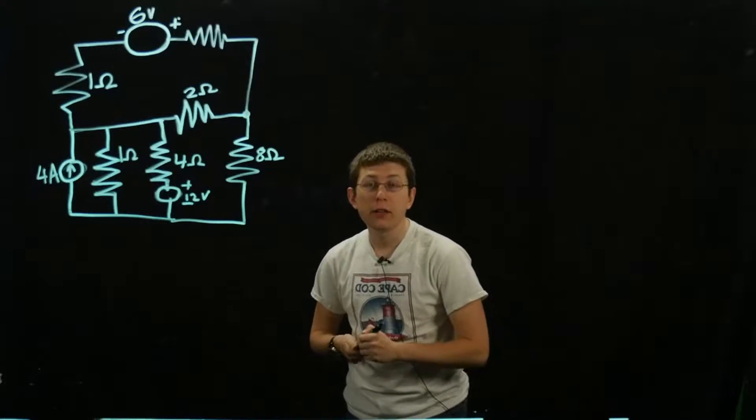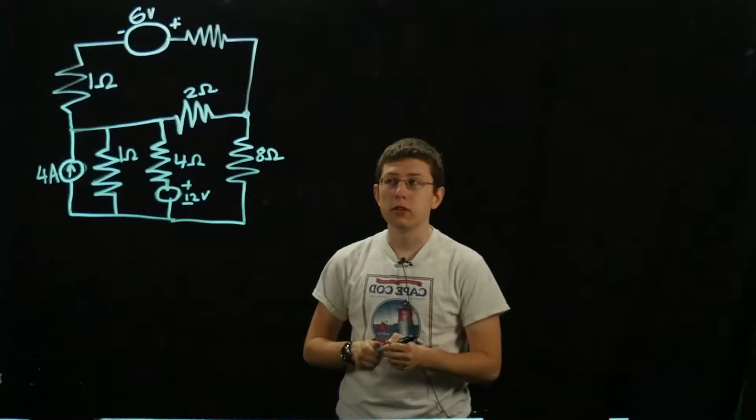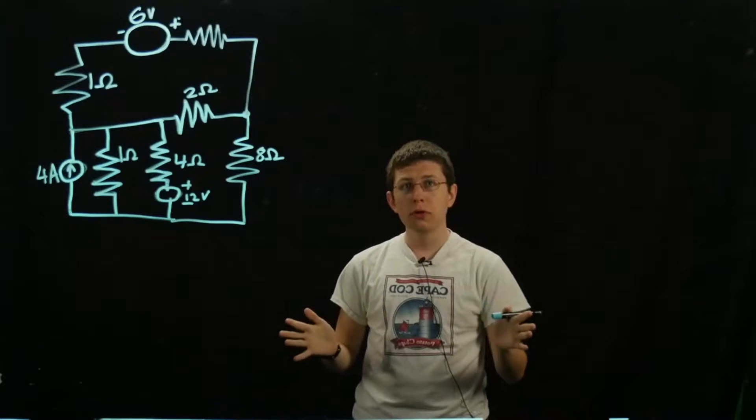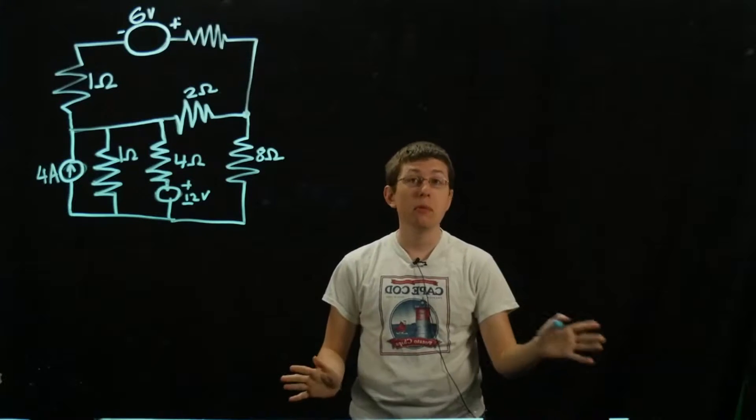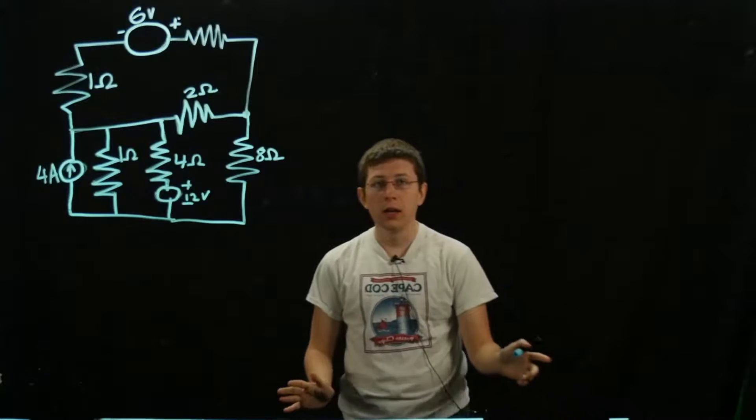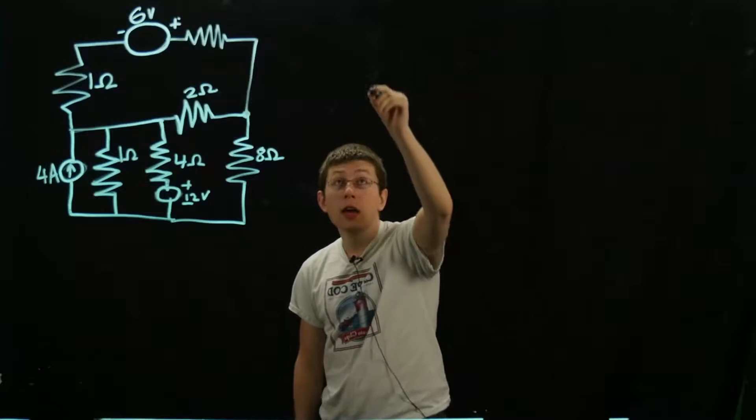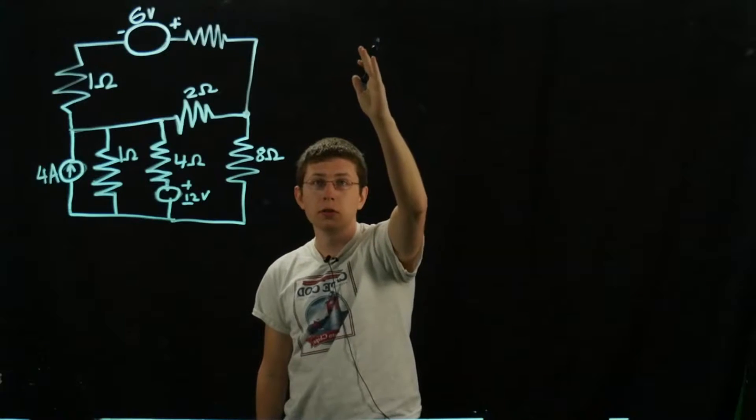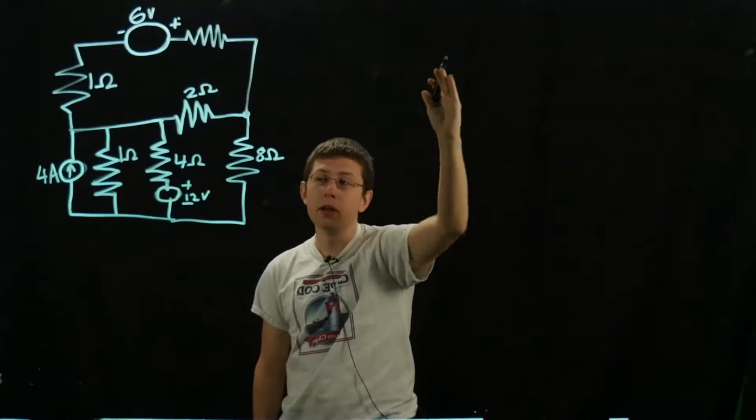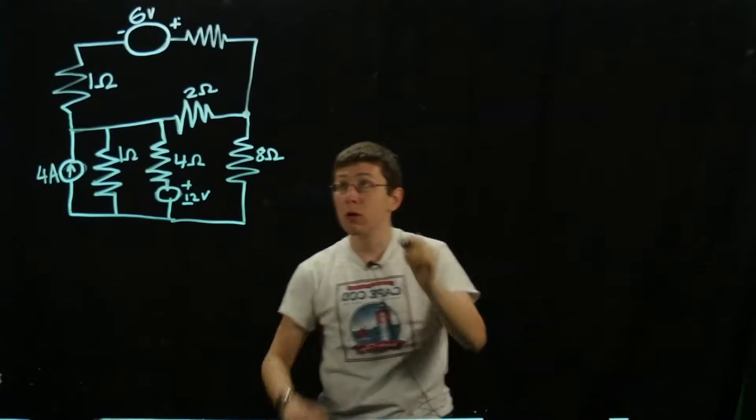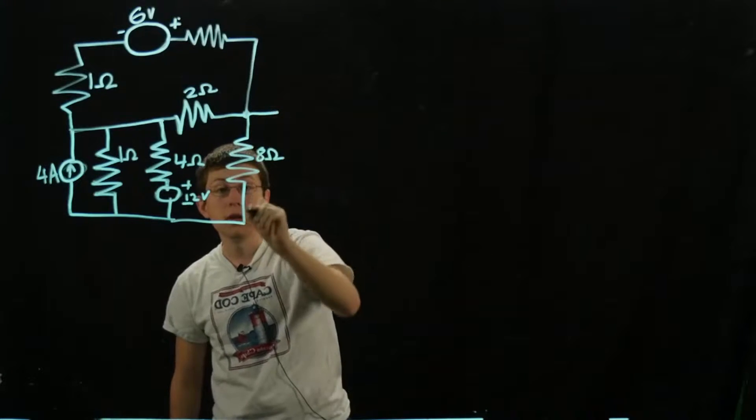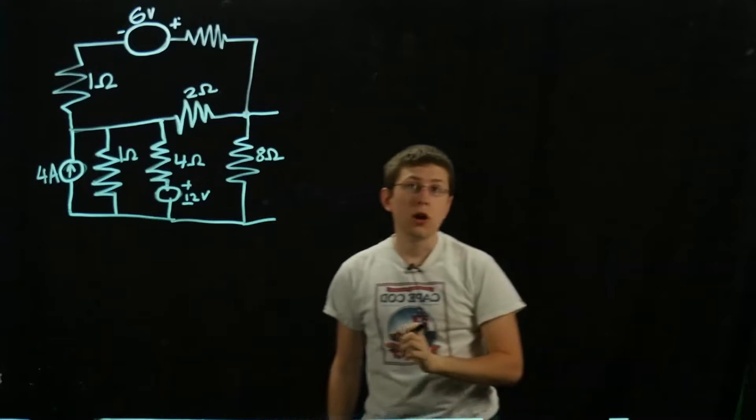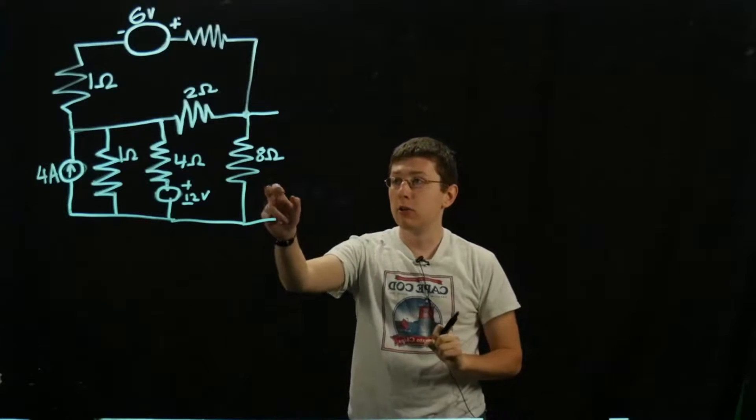Hi, I'm Dan from UConn HKN, and today we'll be doing a Norton equivalent circuit. The goal with Norton equivalent is it's a complement to Thevenin equivalent, in which instead of having a voltage source and a resistor in series, you have a current source and a resistor in parallel. The goal is to find the Norton equivalent across the 8 ohm resistor.